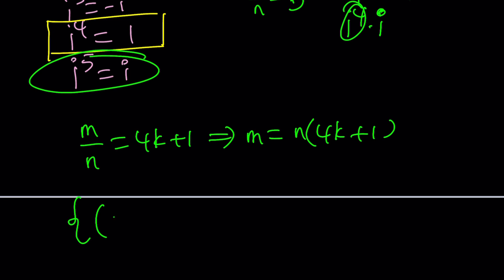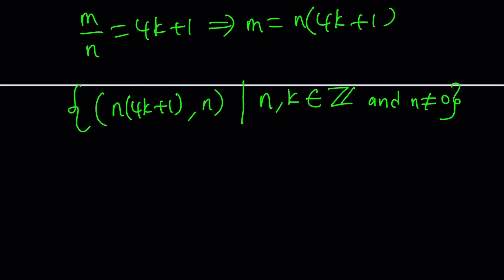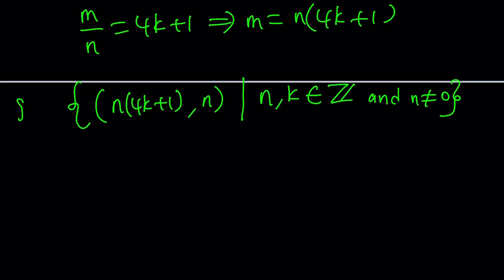So the solutions are ordered pairs like m comma n, or n times 4k plus 1 comma n, such that n and k are integers. But they can't be 0. If n is 0, k can be 0. If k is 0, m is going to equal n, but I should probably specify more specifically, such that this is true and n does not equal 0. I don't have m in the solution set, so I don't need to worry about m values, I only need to worry about n and k.